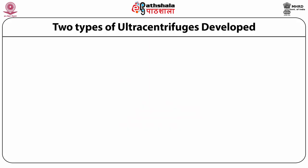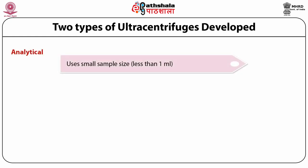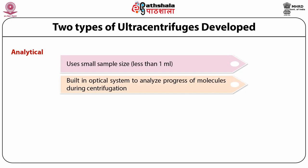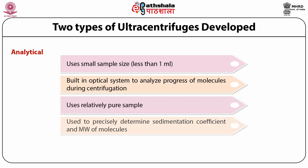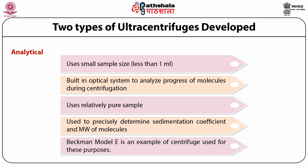Ultracentrifuges are divided into two categories: the analytical ultracentrifuge and the preparative ultracentrifuge. The analytical ultracentrifuge uses a small volume of less than 1 ml and has an inbuilt optical system to analyze the progress of molecules during centrifugation. It uses relatively pure samples for measurement of biophysical properties and characterization, and precisely determines sedimentation coefficient and molecular weight. One example is the Beckman Model E.